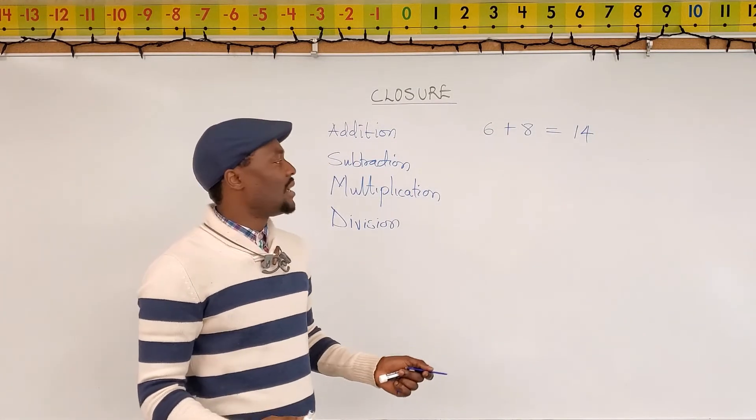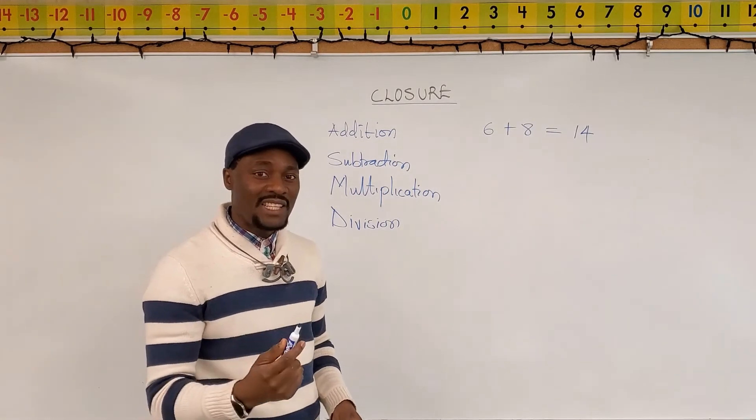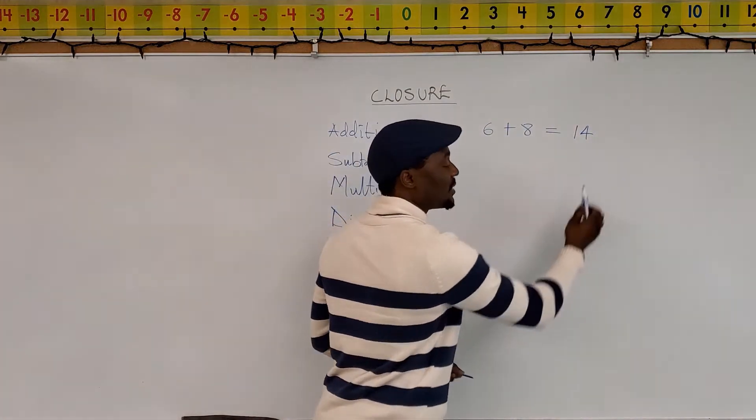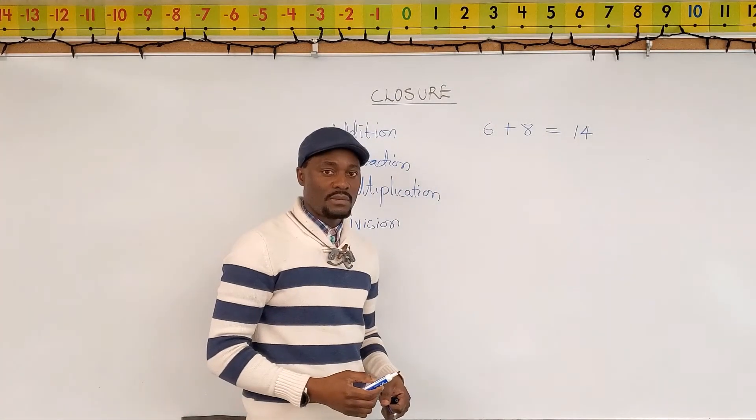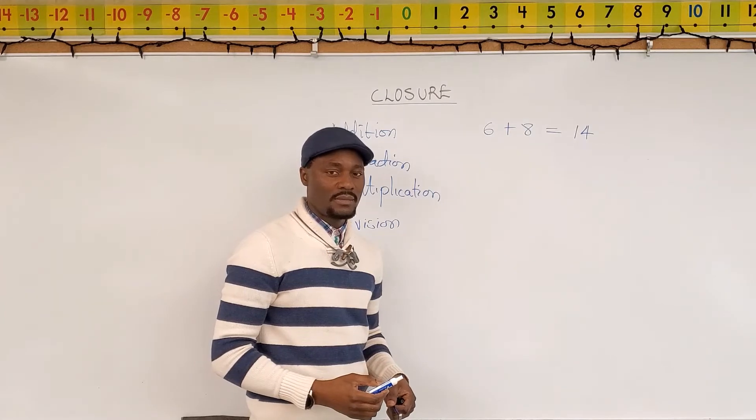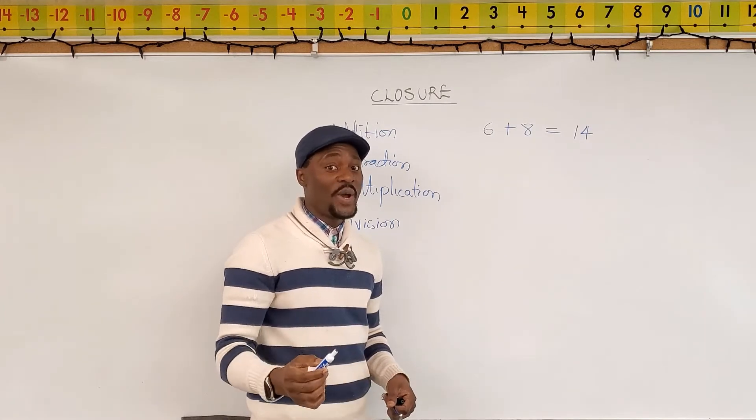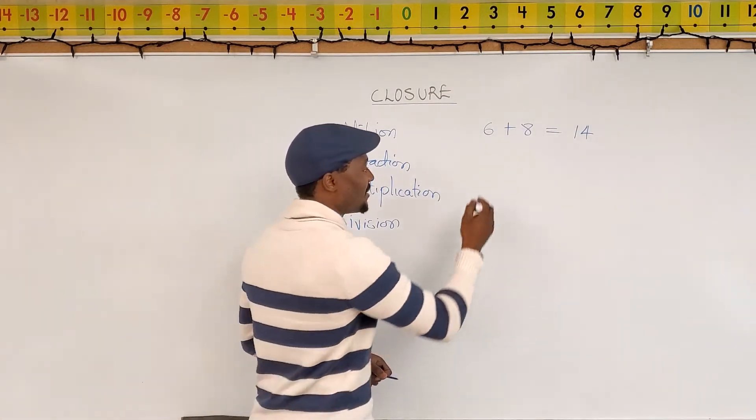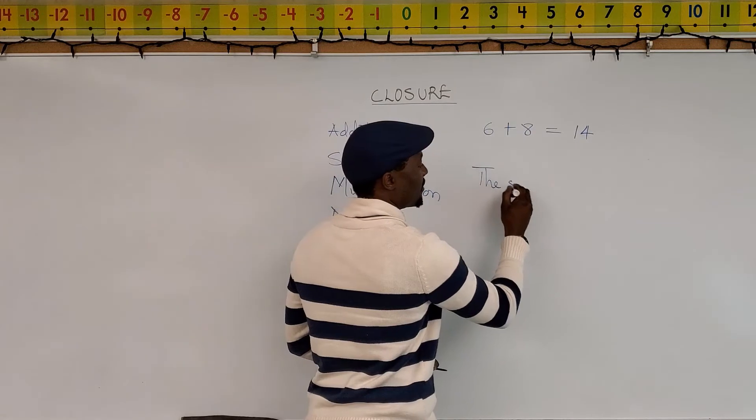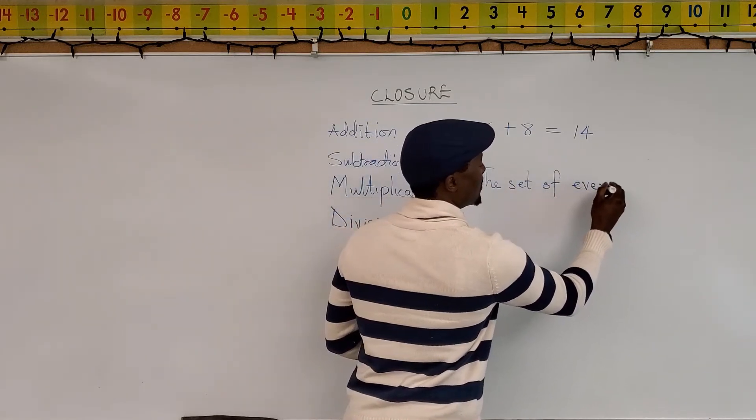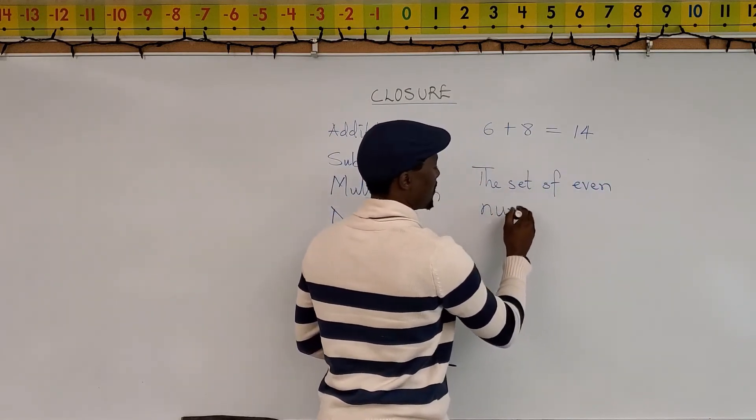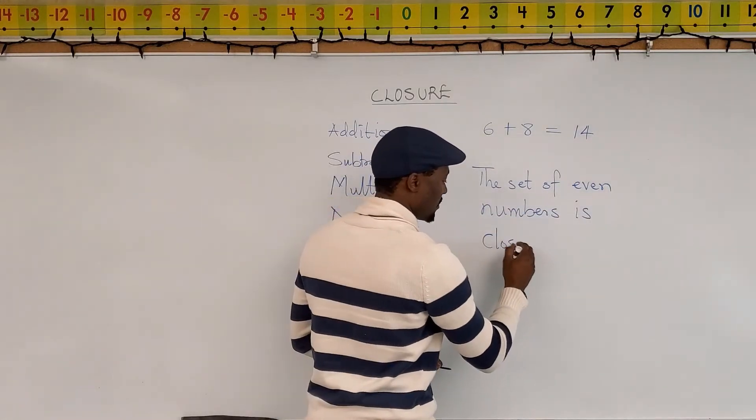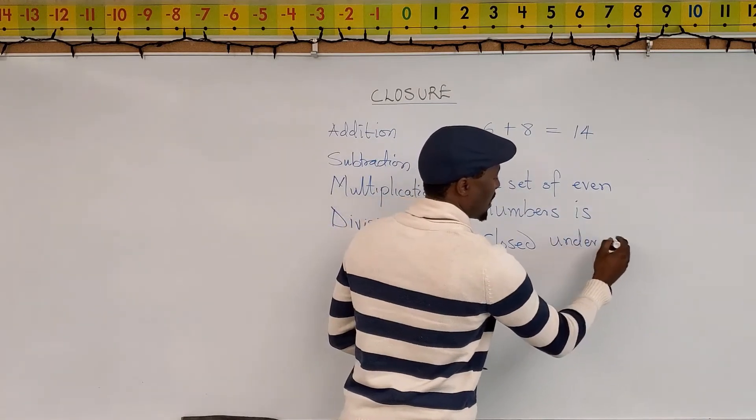Let me think of another case. Is there a case in which I will add two even numbers and my answer will not be an even number? No. Your answer will always be an even number. So you say that the set of even numbers is closed under addition.